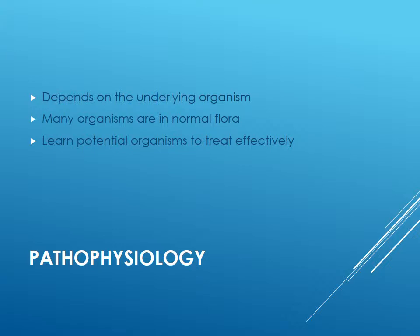We need to learn the potential organisms so we can treat effectively. This is much simpler than it used to be, because we used to try to learn all the different gram positives and gram negatives. But the guidelines that came out in 2007 basically say: start with first line, try that, have them come back, and make sure it's working. If it's not, then do further investigation. So it's actually much easier.